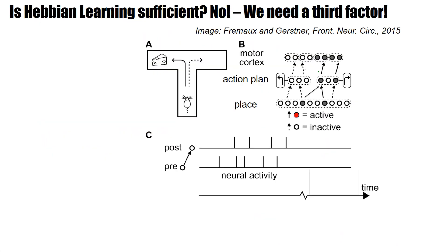Here's a situation where a mouse is in a maze. Suppose the mouse moves forward — it sits at a decision point and has to decide whether it goes left or right. It decides to go to the right. At this location, a certain subset of cells becomes active representing the place, and the mouse decides to move right, meaning at the representation of the action plan, for example in the striatum, a subset of neurons is also active.